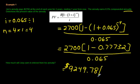That's how much she would need to invest now in order to have a payment coming to her of $2,700 for four years. But it would only be once a year, starting one year from now.